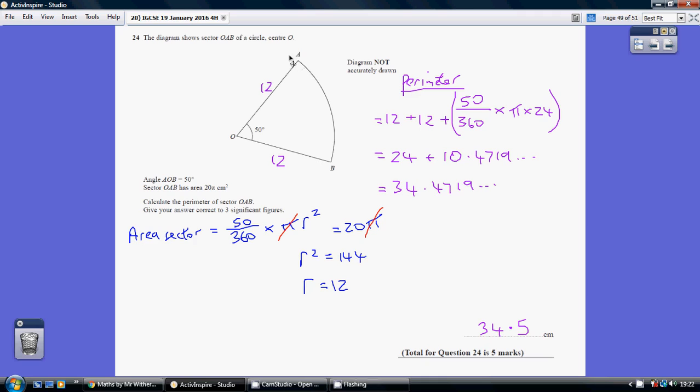Now if we were looking at the circumference of the whole circle, the circumference would be pi times the diameter, so pi times 24 diameter, but again we only want 50 out of 360 degrees worth. So that is the length of the curve line AB.